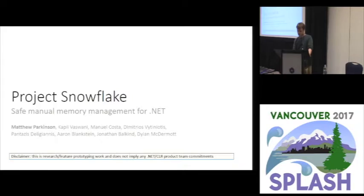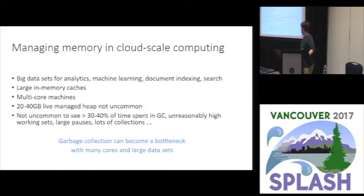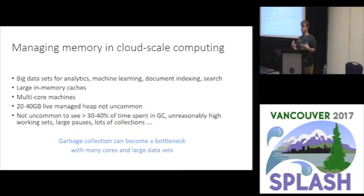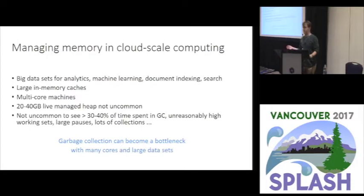What we're interested in is manual memory. You've got big data, big data operating analytics or machine learning, document indexing search — basically doing stuff over tons of memory. And when you want to get the data in these big cloud scenarios, it's actually really expensive to go to storage, so you cache lots of it. So you've got big caches as well.